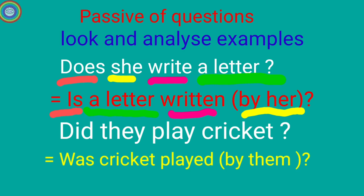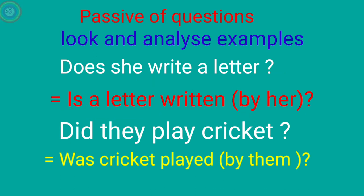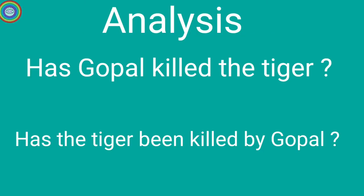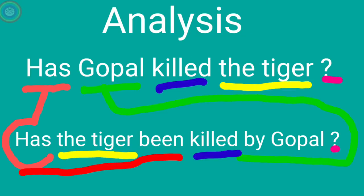Today's subtopic is passive of questions. Look and analyze. Example one: 'Does she write a letter?' This is simple present tense, so we use 'is' in the first position. 'Is a letter written by her?' The object 'a letter' becomes the subject, and we use V3 'written'. The agent 'she' changes to 'by her'.